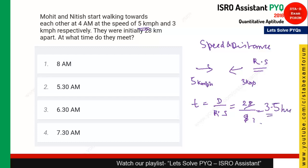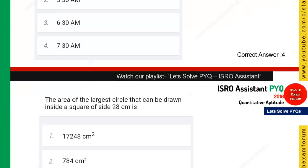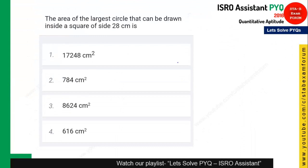3.5 hours is 3 and a half hours. They started from 3 AM, so 3 AM plus 3.5 hours is 6:30 AM — wait, that gives seven and a half, so the answer is option 4.